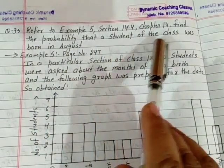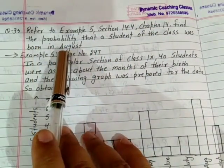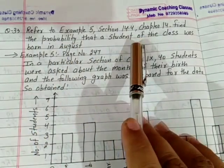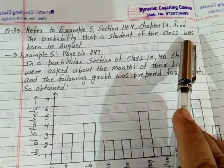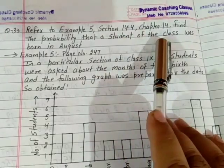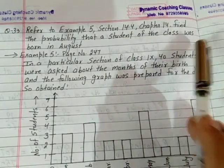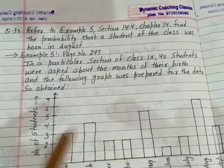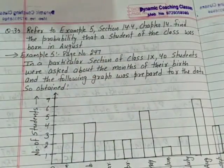Find the probability that a student of the class was born in August. I have written that Example 5 here. You can see page number 247.